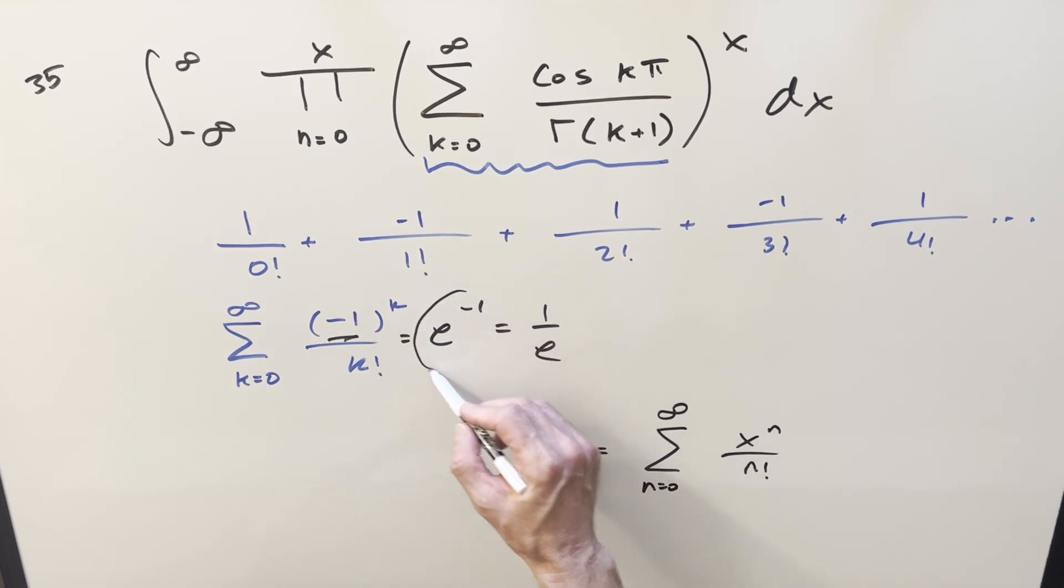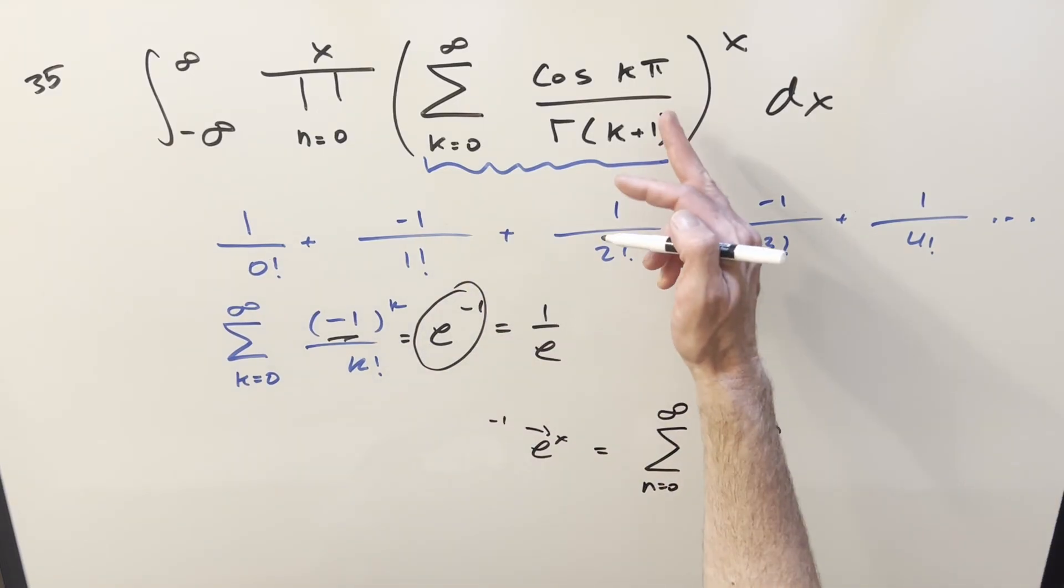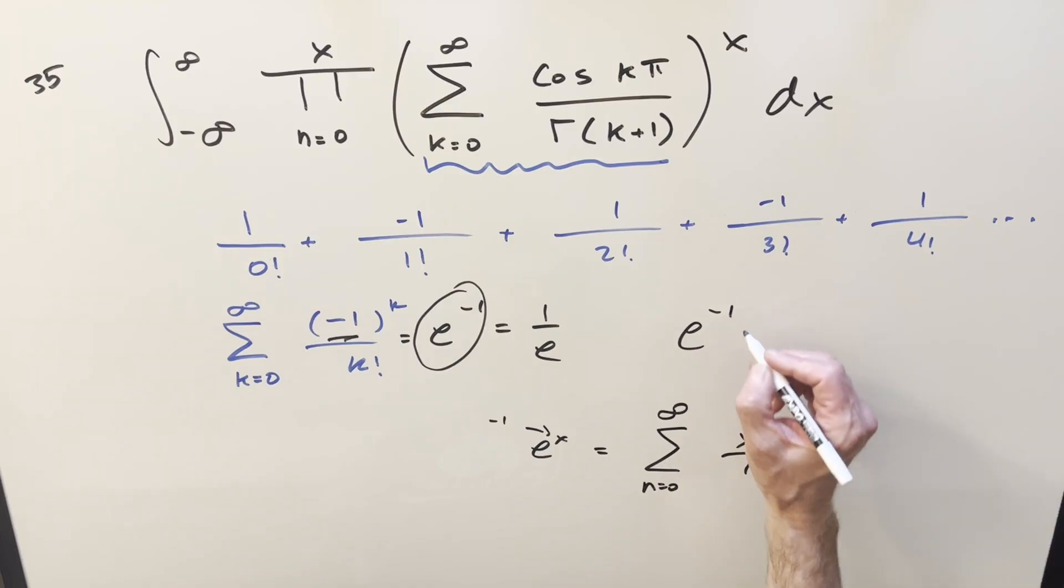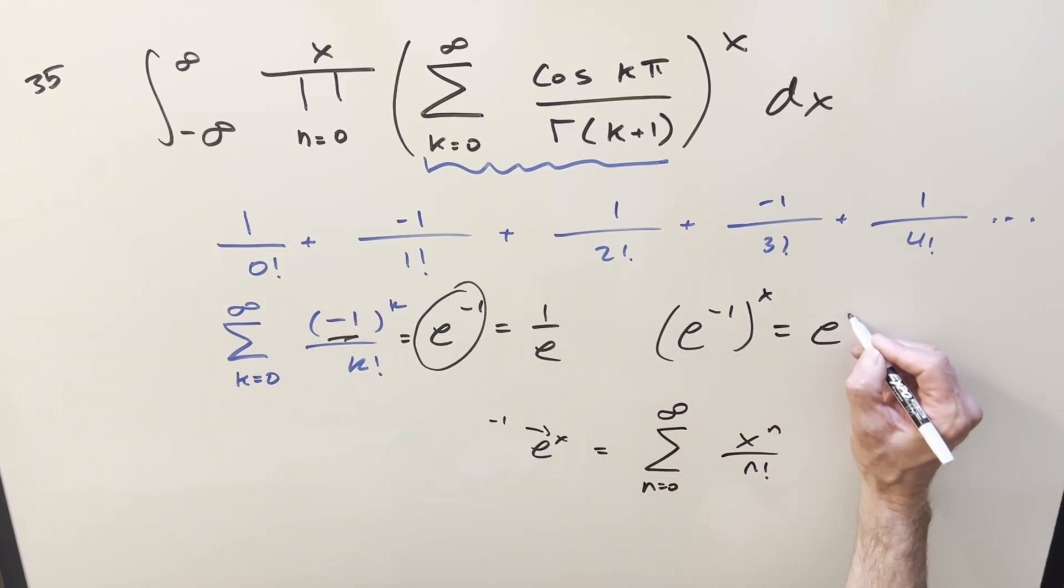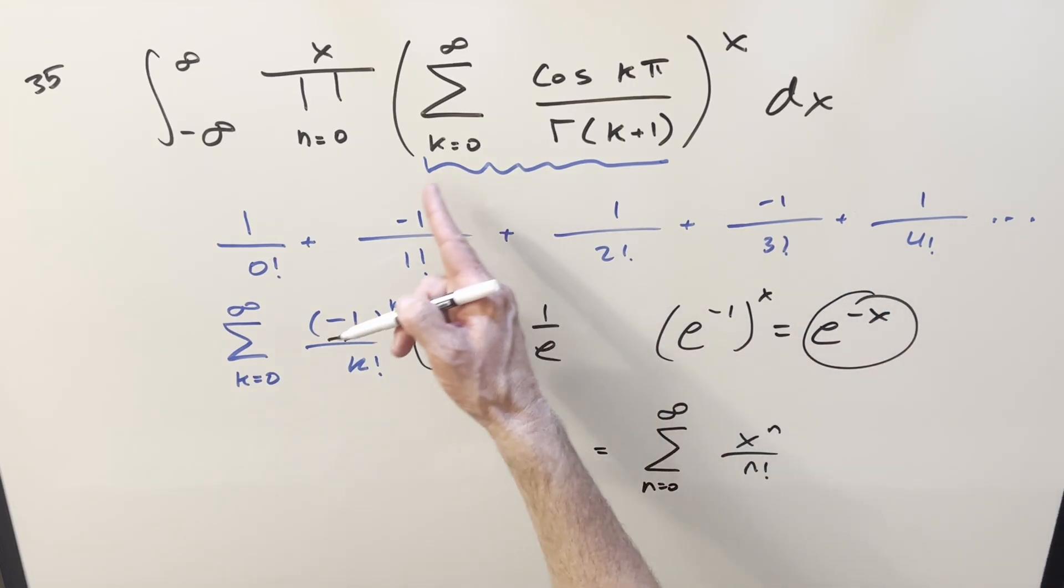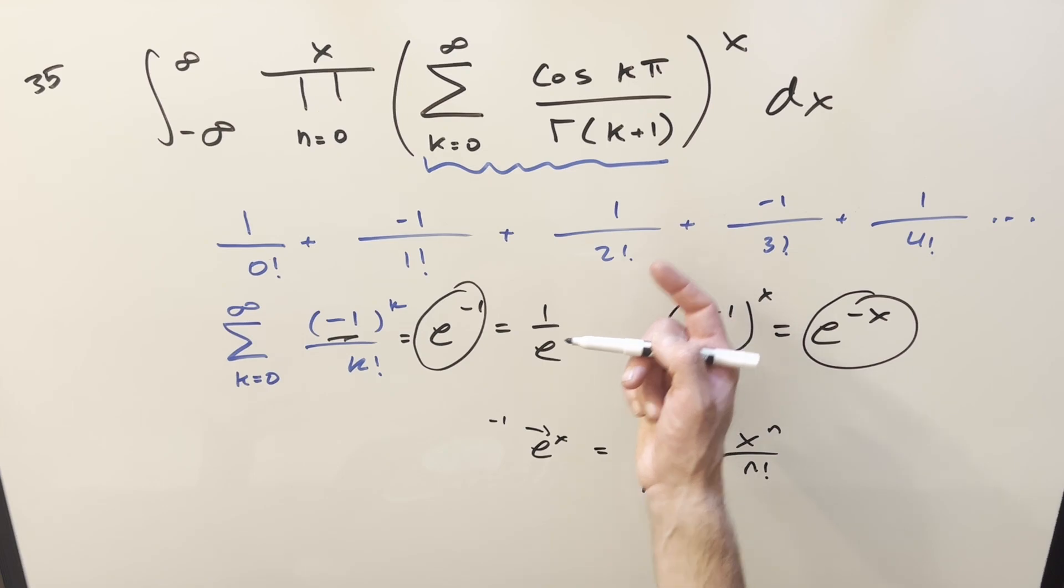So I think I'll write it this way. And then notice that we've got an x exponent on it. So if you have e to the minus one to the x, this is going to be the same thing as e to the minus x. So it's going to clean up a lot because we'll just take this e to the minus x, throw it back in for the whole sum part, and we can go from there.